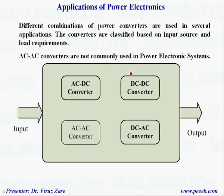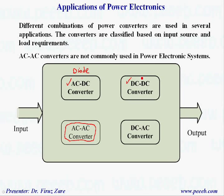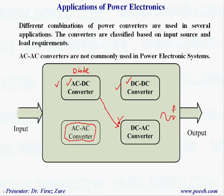Different combinations of power converters are used in several applications, classified based on input source and load requirements. It is important to note that AC-AC converters are not very common in industry. The most important power converters are AC-DC — based on diode rectifiers — then DC-DC, which converts DC at different voltage levels either constant or adjustable, and DC-AC especially cascaded with AC-DC so we can control output frequency and magnitude. These three converters — AC-DC, DC-DC, and DC-AC — are very common and very important in power electronics.